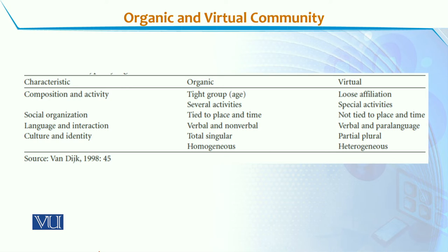जो first characteristic है जिसको membership कहते हैं और membership की base पे अगर हम composition और activity देखें, तो जो organic communities हैं, जो physical communities होती हैं, उसमें group जो होता है वो बड़ा tight group होता है, यानि उसमें एक specific age की basis पर groups बनते हैं और उसमें several activities भी हो सकती हैं जो एक particular group perform कर रहा होता है. मगर virtual community होती है उसमें loose affiliation होती है, यानि उसमें different age groups के लोग भी हो सकते हैं और different social background के लोग भी हो सकते हैं, पर वो activities जो होंगे वो special set of activities perform कर रहे होंगे. Virtual communities actually बनती हैं interest की basis पर और वो interest किसी भी age group का हो सकता है.